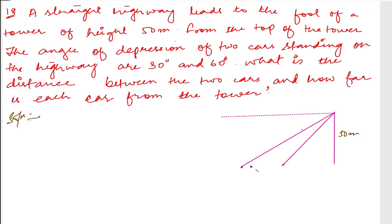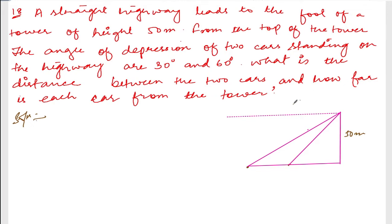If I join these points it will be like this — a straight highway with the tower 50 meters at the foot. From the top of the tower, the angle of depression of two cars are 30 and 60 degrees. So this angle of depression is 30 degrees and this one is 60 degrees.